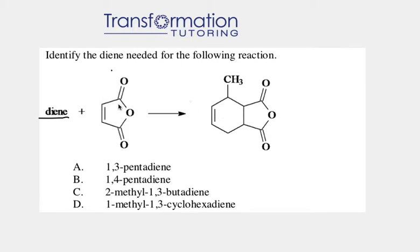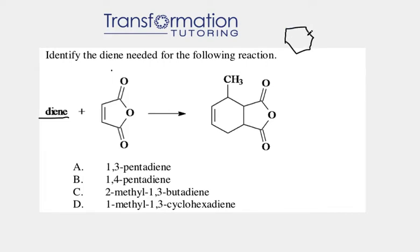Usually for a Diels-Alder reaction we have to predict the product, but here we have to go backwards to figure out one of the reactants — the diene. So how do we go backwards? We can do a reverse Diels-Alder reaction, and here I'm going to show you a prototype.